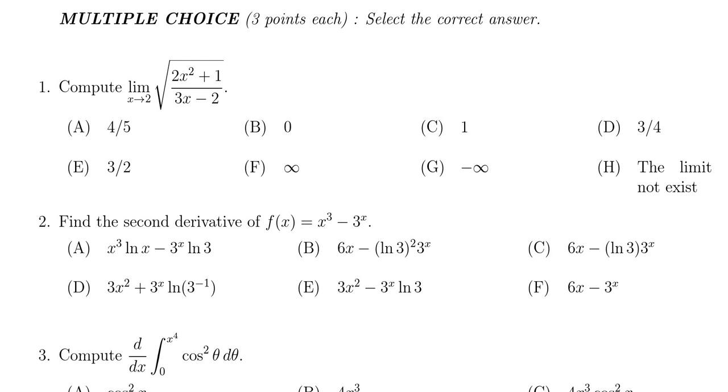In this video, we provide the solution to question number one for the practice final exam for Math 1210, in which case we're asked to compute the limit as x approaches 2 of the square root of 2x squared plus 1 over 3x minus 2.